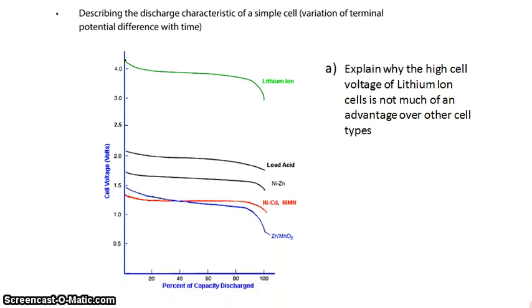In this question, we're given a graph of the cell voltage by percent of capacity discharged for a number of different rechargeable battery types, secondary cells. We're asked to explain why the high cell voltage of a lithium-ion cell is not much of an advantage over the other four types.